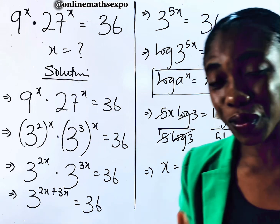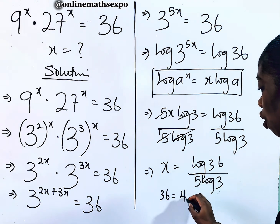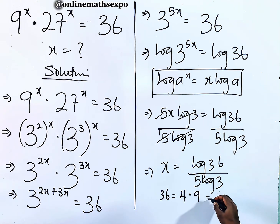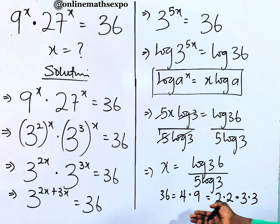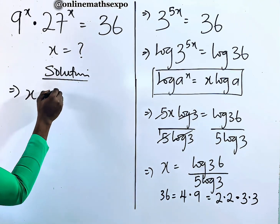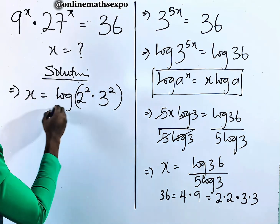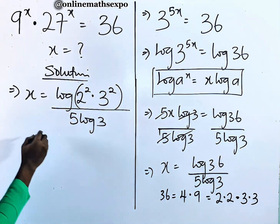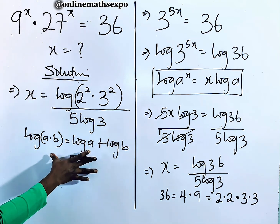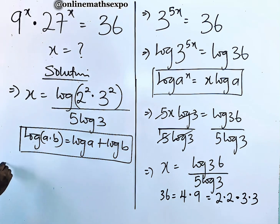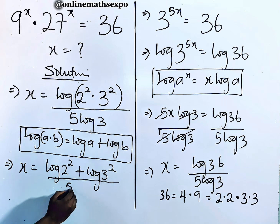Do you intend to leave it at this point? No, it's not yet simplified. Now this 36 — we know that 36 is the same as 4 multiplied by 9. And 4 is the same as 2 multiplied by 2, which is 2 squared, and 9 is 3 squared. So we now have x equal to log of 2 squared times 3 squared, divided by 5 log 3. For every log of a multiplied by b, it equals log a plus log b. Applying this to the numerator: x equals log of 2 squared plus log of 3 squared, divided by 5 log 3.